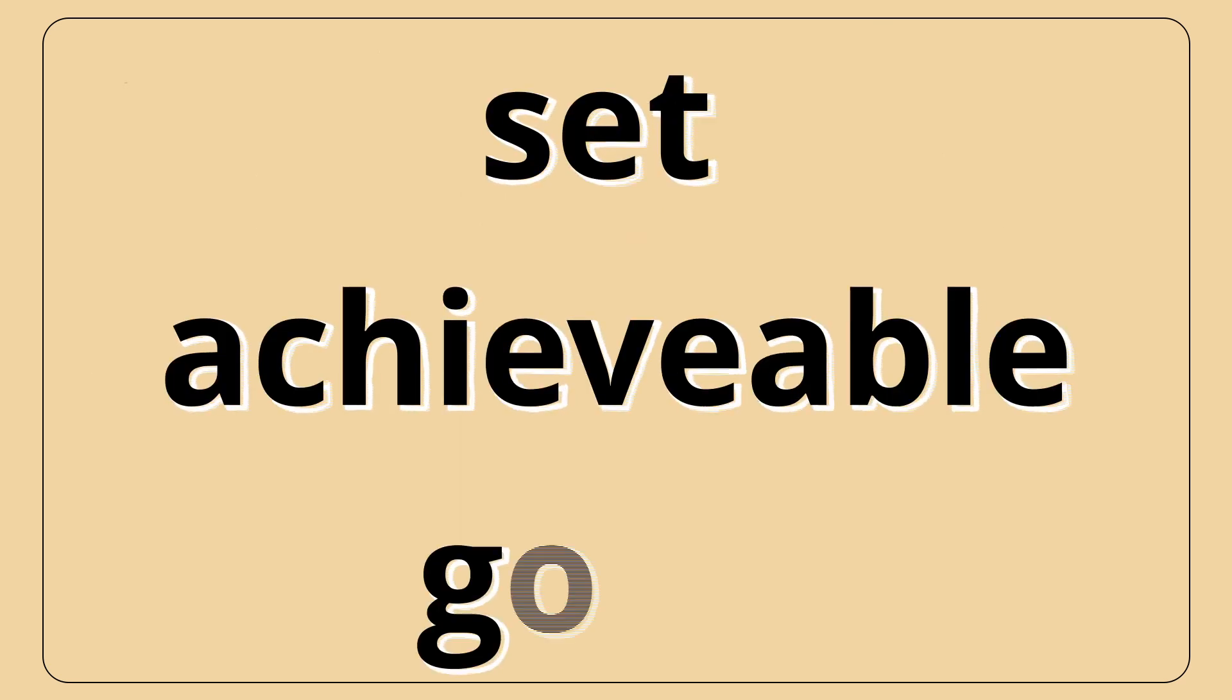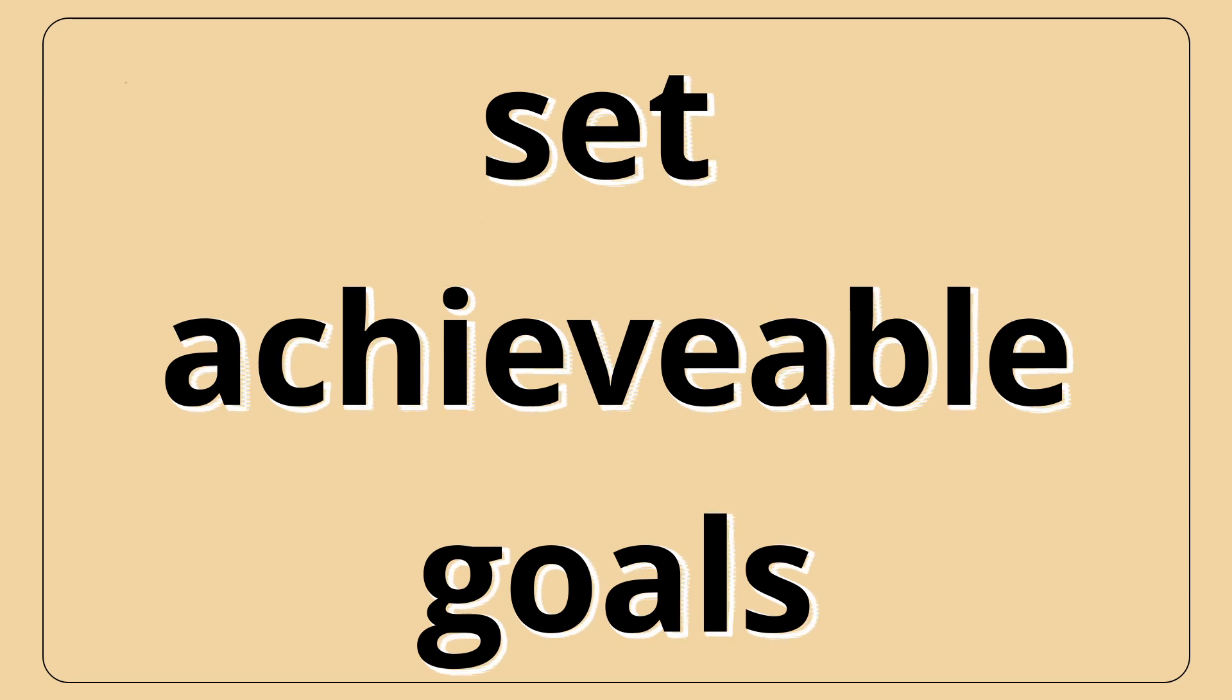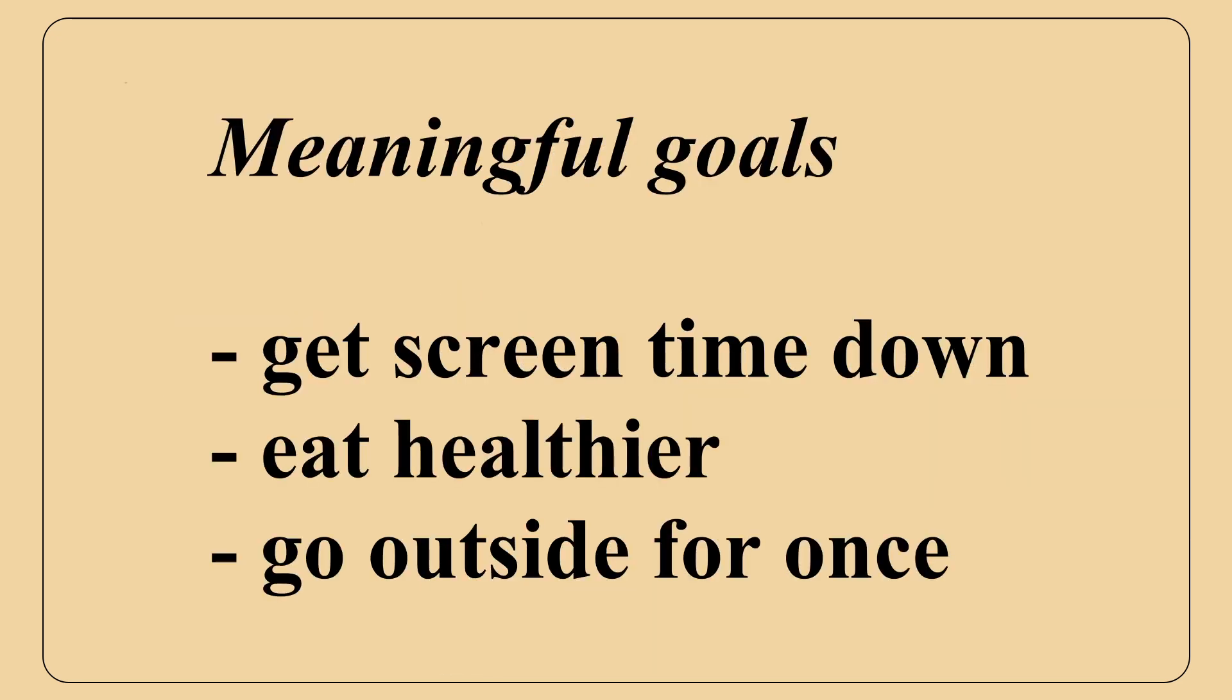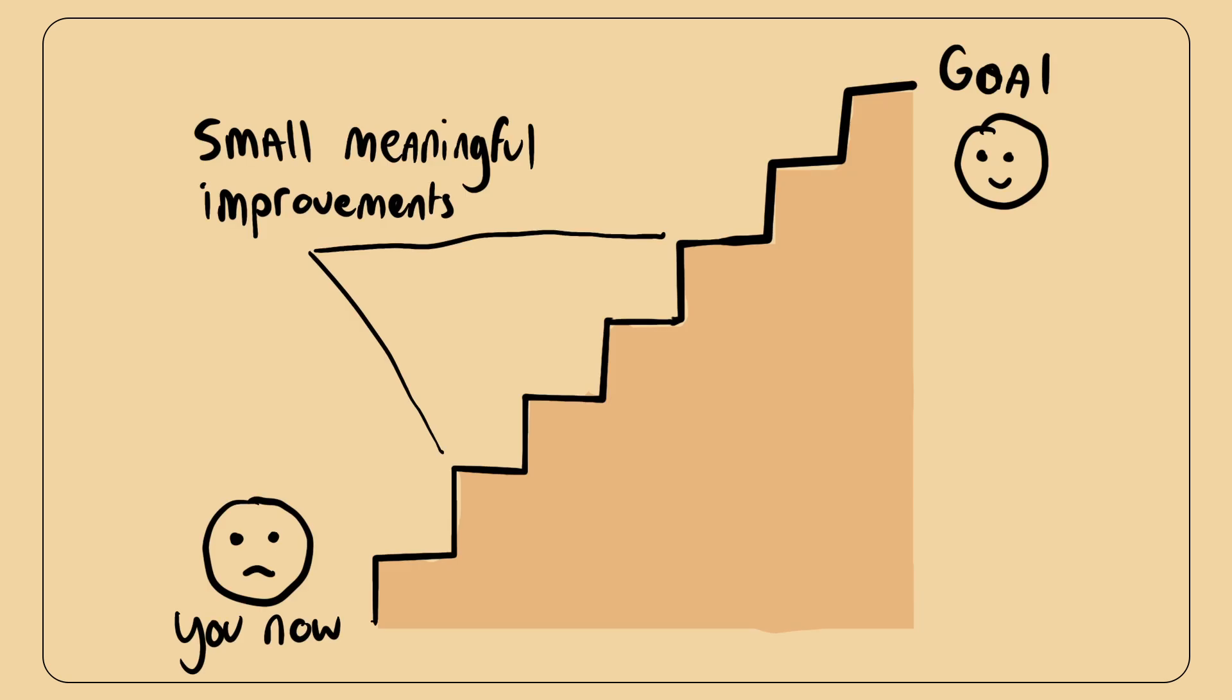Then with that knowledge, set achievable goals. In order to make small incremental changes, you have to set a meaningful goal to reach. Whether you want to get your screen time down by a couple hours or want to eat healthier, the goals have to be achievable enough that you can notice the small changes making an impact over time.